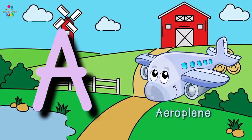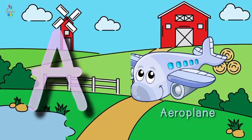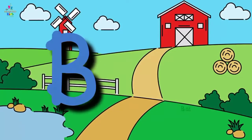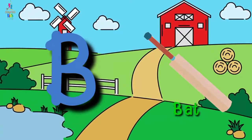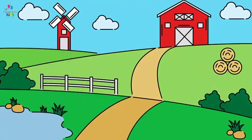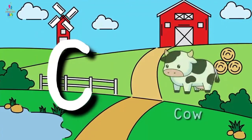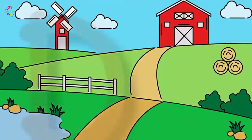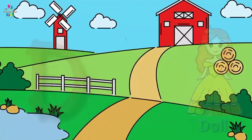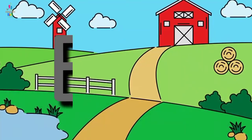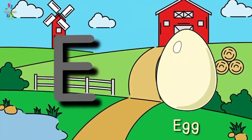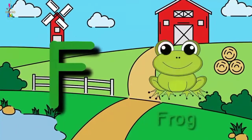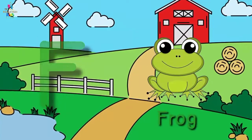A for aeroplane, B for bat, C for cow, D for doll, E for egg, F for frog.